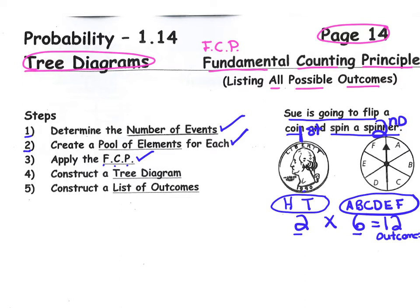For example, you could get heads and the letter A on the spinner, or heads and the letter F. You could get tails and the letter B, or tails and the letter C. But just randomly listing outcomes is not very organized. We know there are going to be 12, but how do we come up with an organized list? Step four: we're going to use a tree diagram to construct an organized list.